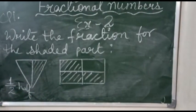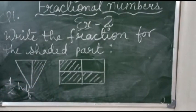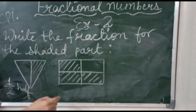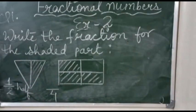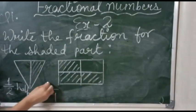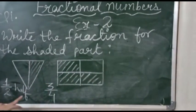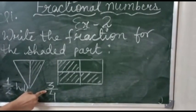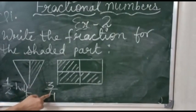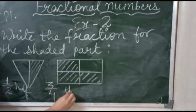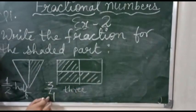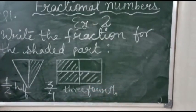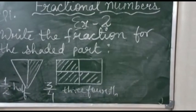The next shape is a rectangle. There are three parts shaded and a total of four parts, so four we will write in the denominator and three we will write in the numerator. This line is called 'by', 'over', or 'upon'. So here three by four is called three-fourth.